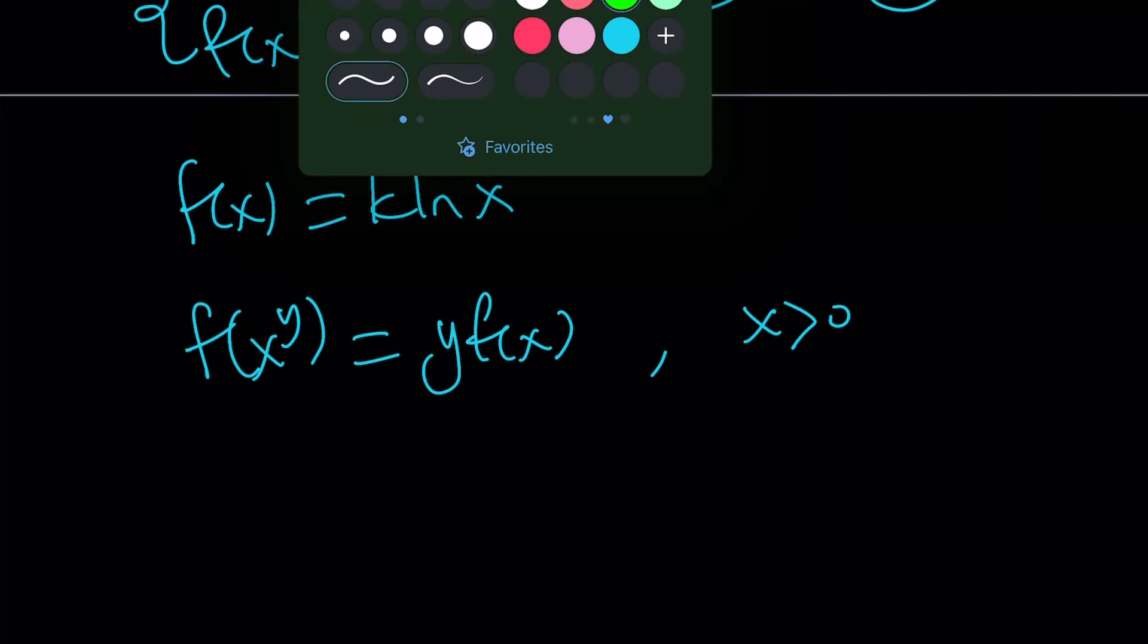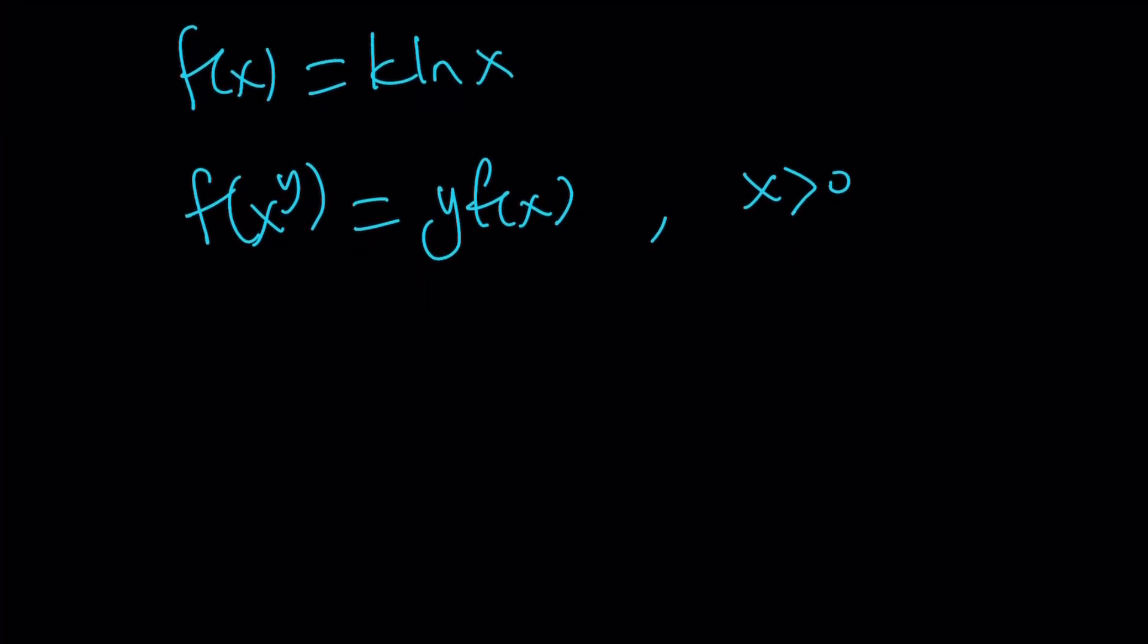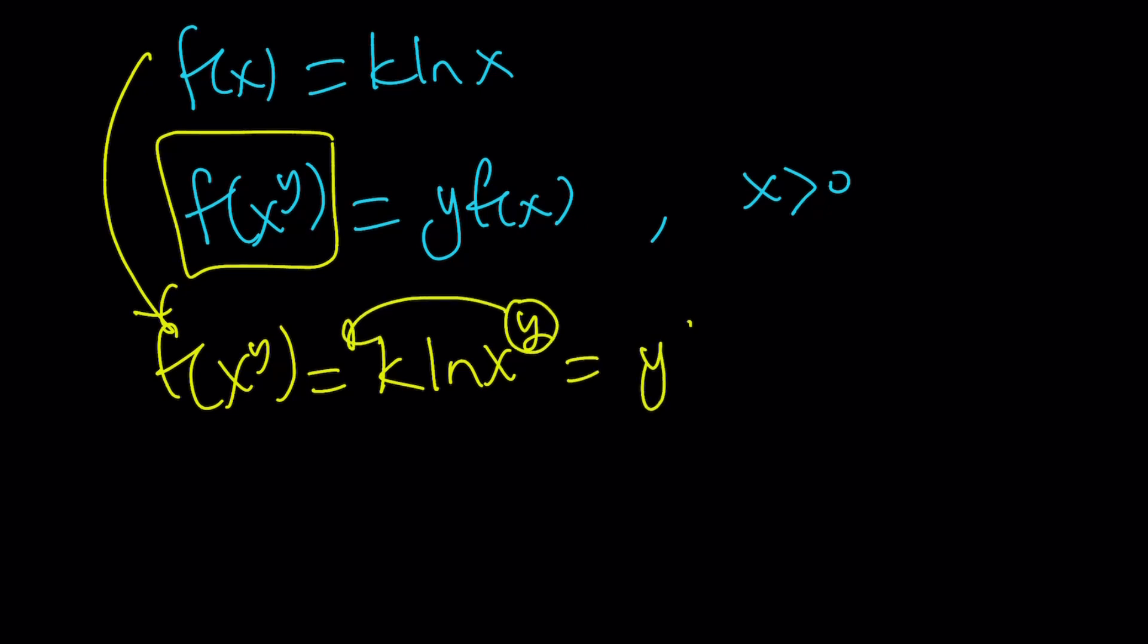You don't have to do it, but it's just fun. Let's give it a try. So I'm going to evaluate f of x to the y. f of x to the y by this is equal to k times ln x to the y. And this can be written as move the y to the front, y k ln x.